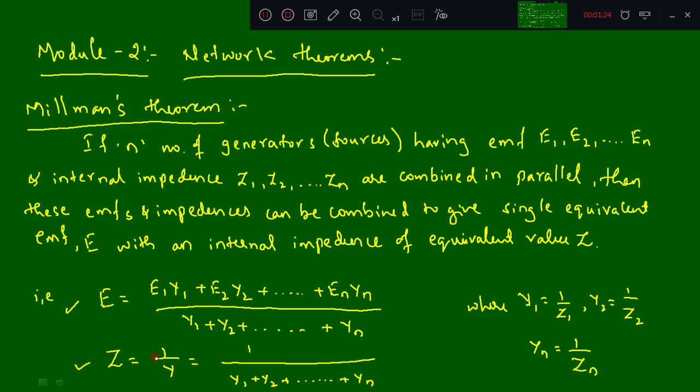The equivalent impedance Z will be 1 by Y, that is nothing but 1 divided by Y1 plus Y2 plus till Yn. So this is the statement of Millman's theorem.